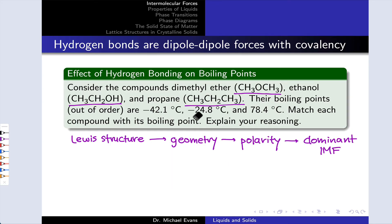In this problem, we're given three boiling points and three compounds, dimethyl ether, ethanol, and propane, and asked to match the compounds to the boiling points, explaining our reasoning along the way. So here, really, we're sort of doing a comparison of boiling points problem just in disguise. We still need to follow this chain of reasoning from the Lewis structure through to the dominant intermolecular force.